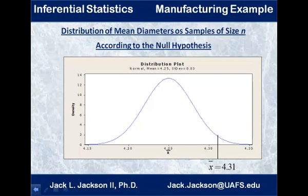We see where x-bar of 4.31 falls on that distribution — it's over to the right side. If x-bar were close to the middle near the mean of 4.25, that would clearly not be unusual. If it were way out past 4.35, that would be obviously too much variation. But 4.31 is maybe questionable — is this enough to be really unusual, or is it okay? Let's put some numbers to it based on the alpha we have.